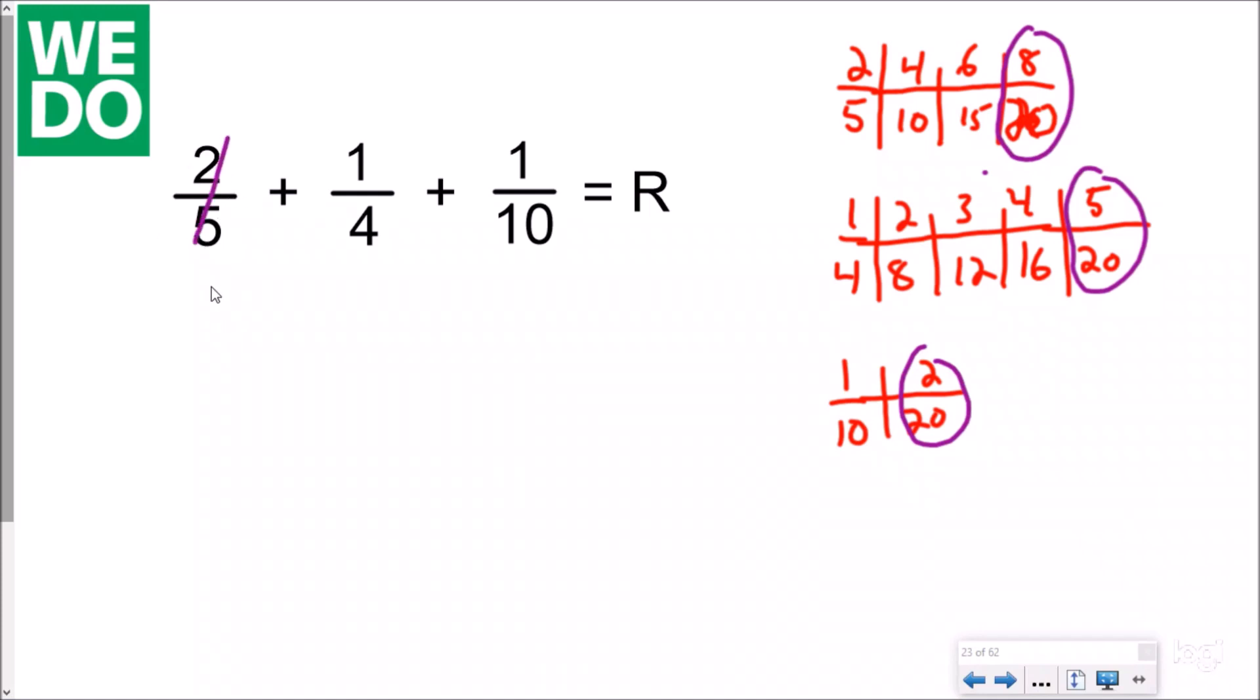Now I'm going to rewrite my equation with the proper equivalent fractions with a common denominator. So I know that two-fifths became eight-twentieths, plus one-fourth became five-twentieths, plus one-tenth became two-twentieths.